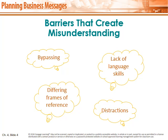And barriers that create misunderstanding. The first is bypassing — a word is misunderstood, meaning the receiver does not clearly understand the meaning of the word, which leads to miscommunication. Then there is lack of language skill. Different frames of reference: each person's frame of reference differs based on belief, culture, experience, and education. The word or message you send may be understood according to the receiver's own frame of reference, so keep this in mind when sending a message. Number four is distraction — from noise or any other method.